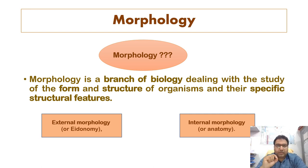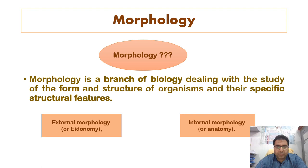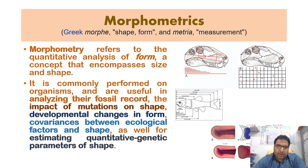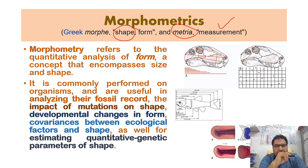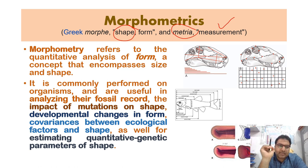Now when we measure these morphometric characters, that branch is called morphometrics. Morphometrics is derived from the Greek word 'morph', which means shape, and 'metria', which means measurement. So morphometry refers to the quantitative analysis of form — a concept that encompasses size and shape.